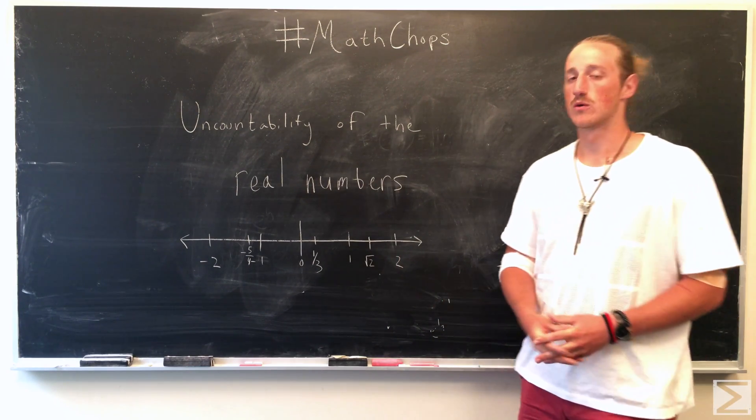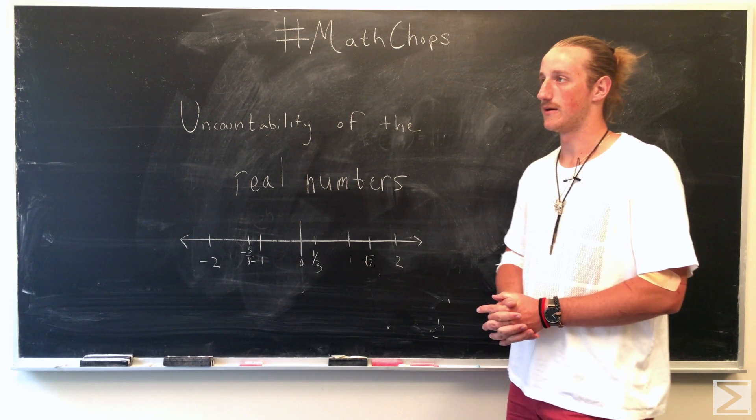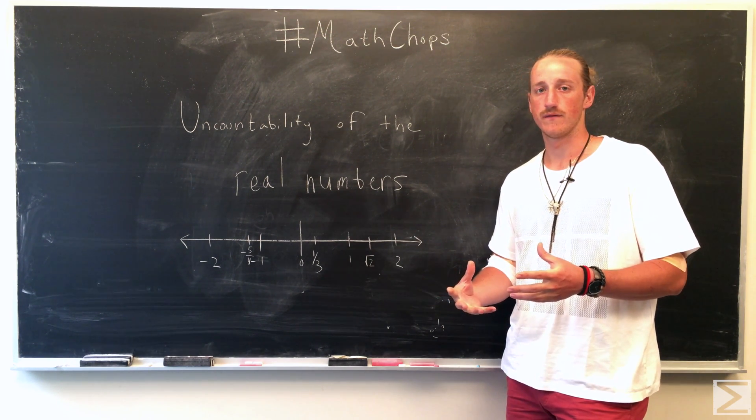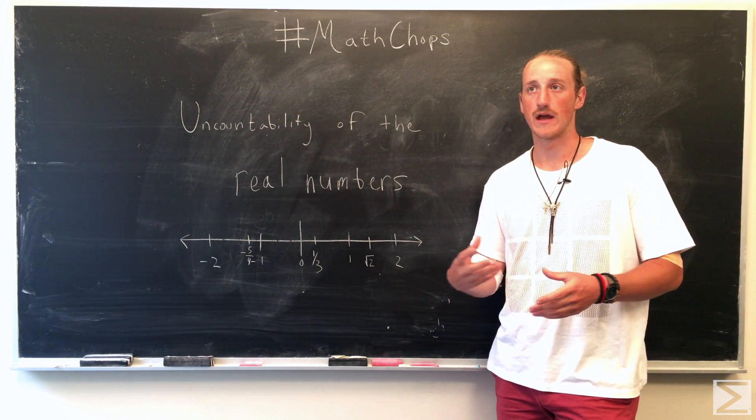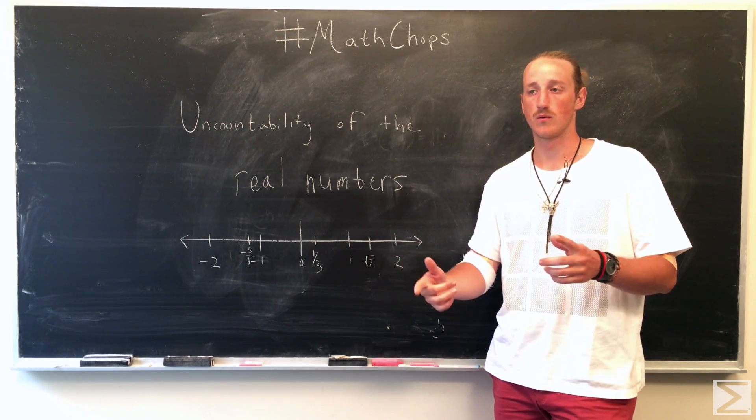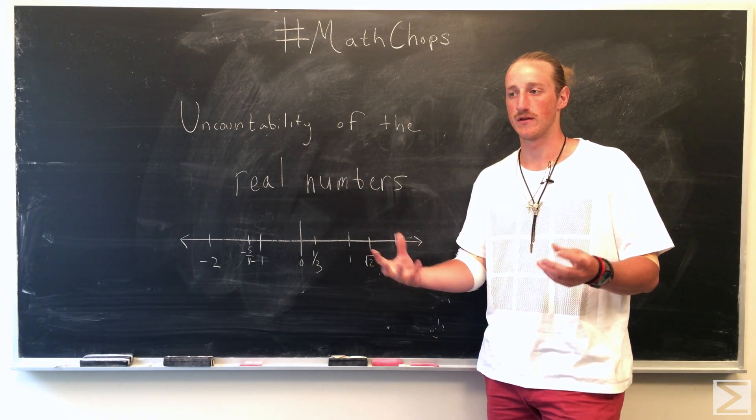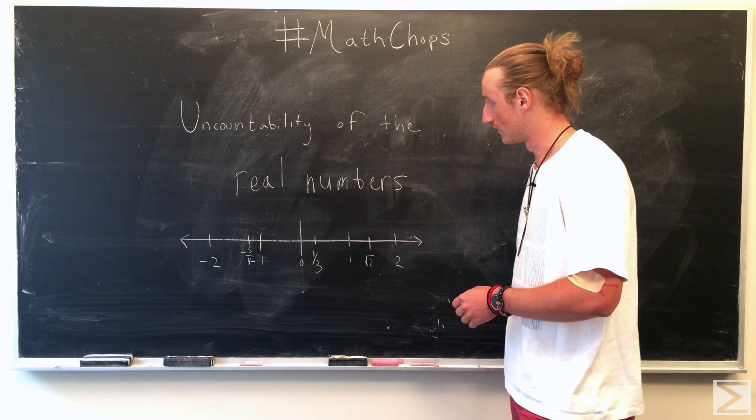So George Cantor proved this using set theory and looking at the mapping of sets to the natural numbers. And if you're able to have a one-to-one correspondence between the natural numbers and the set you're mapping, then it is considered a countable set. So let's look at that.